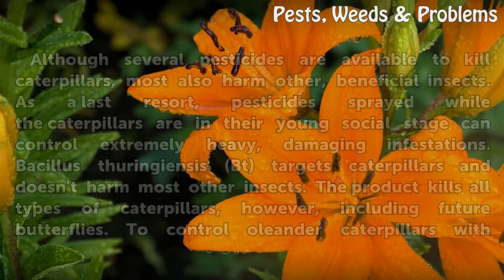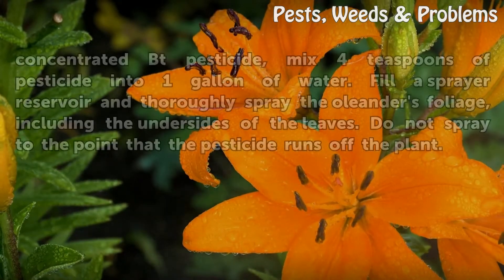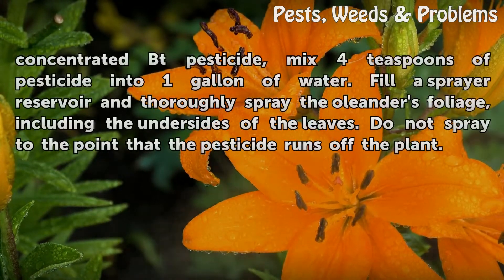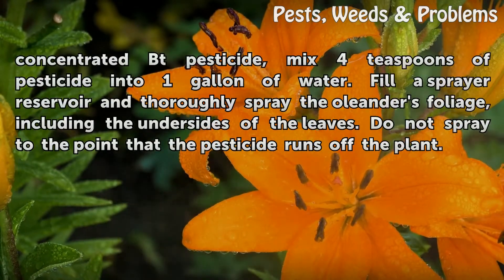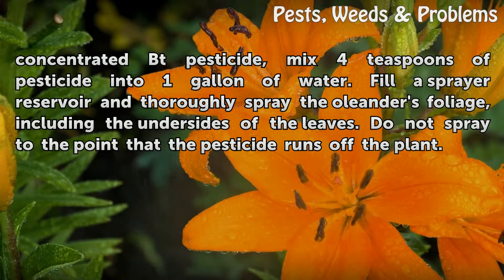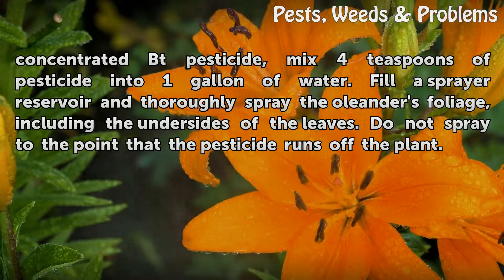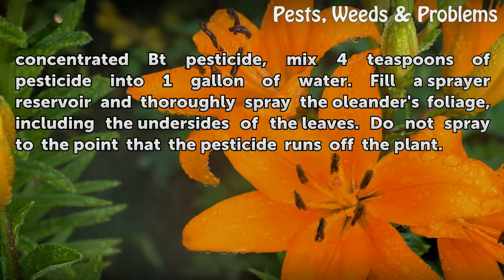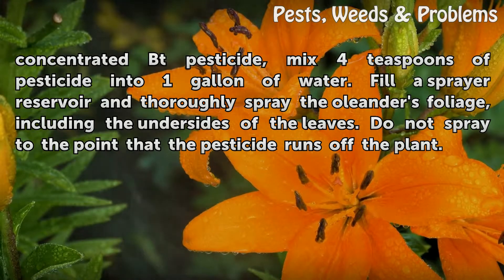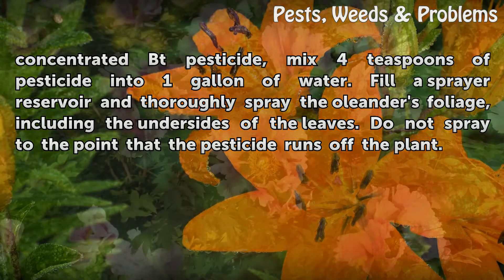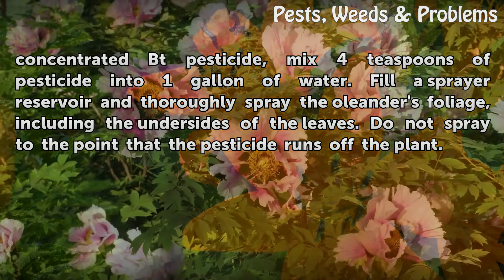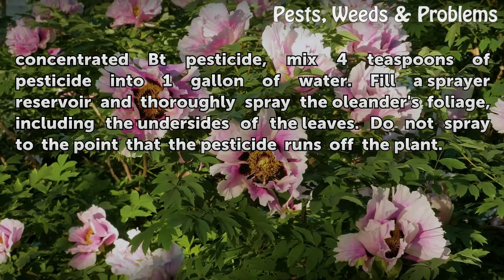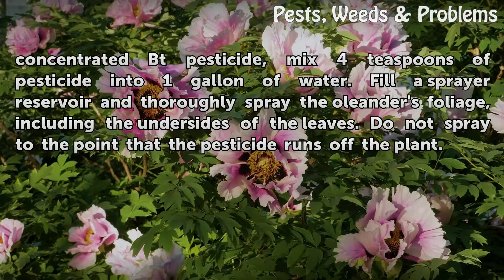To control Oleander caterpillars with concentrated Bt pesticide, mix 4 teaspoons of pesticide into 1 gallon of water. Fill a sprayer reservoir and thoroughly spray the Oleander's foliage, including the undersides of the leaves. Do not spray to the point that the pesticide runs off the plant.